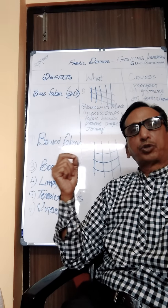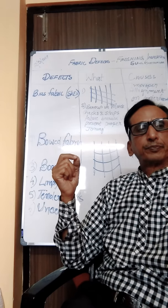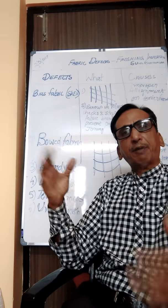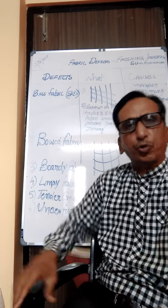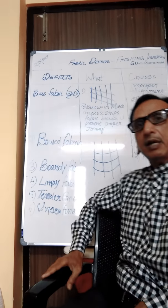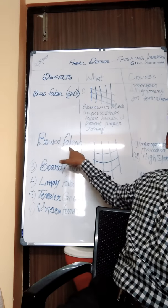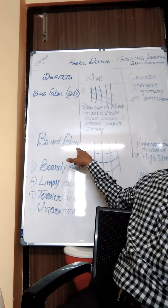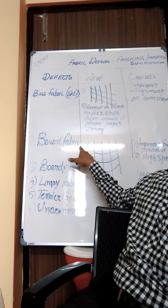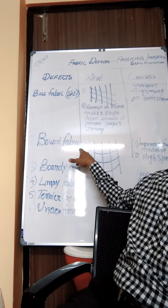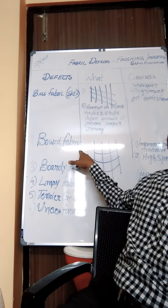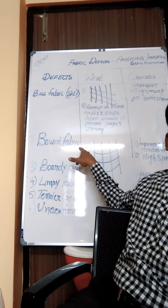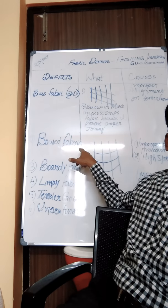Bias fabric is serious because it prevents proper joining of pattern parts in garment manufacture. This condition is also known as skew, and with this imperfection the fabric is called a skewed fabric. Another defect is called bowed fabric, where the filling yarns curve and do not go straight across. It is caused by improper tenter frame procedures.